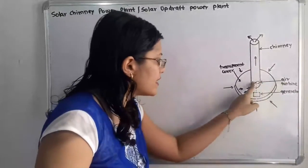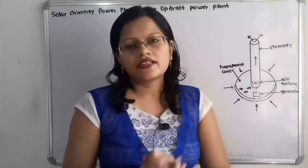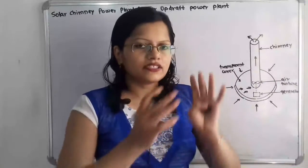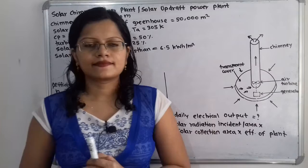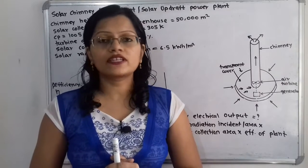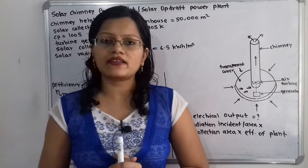When the hot air enters the central chimney, it passes through air turbines. The kinetic energy of the moving air is converted into mechanical energy by the turbine, and then the mechanical energy is converted into electrical energy by the generator attached to the air turbine. This is the operating principle of the solar chimney power plant.